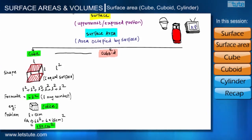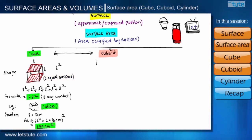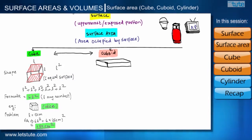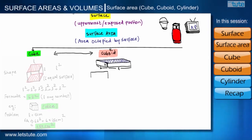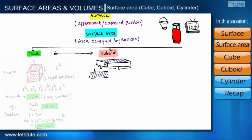Our second shape for this session is a cuboid. First, let us see the difference between a cube and a cuboid. A cube has six surfaces that are all square-shaped, while in a cuboid all surfaces are rectangular and only opposite surfaces are equal to each other. Suppose the length of this cuboid is L, breadth is B, and height is H. Let us find the surface area of the top surface — it is rectangular with sides L and B.